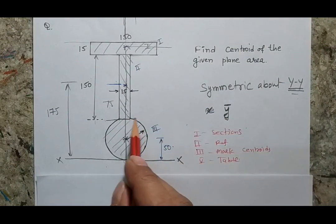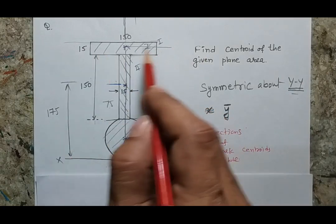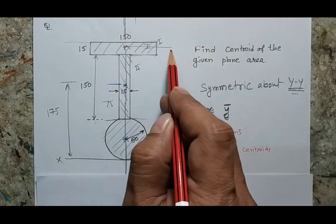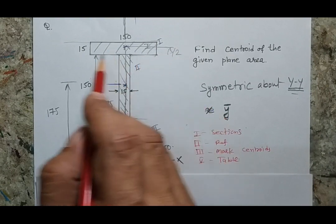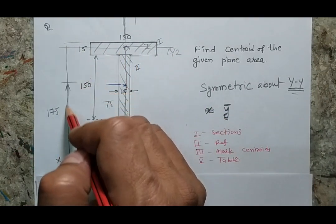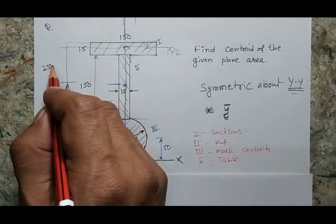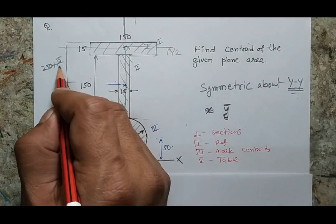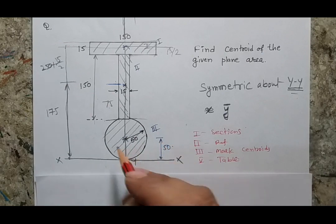For the third centroid position: starting from the bottom, we have 100 plus 150 equals 250, then adding half the thickness of 15 gives 250 plus 15 divided by 2. So the centroid of the top section is at 265 minus 15 by 2. I have now marked the references, the individual centroids, and their positions with respect to the reference.